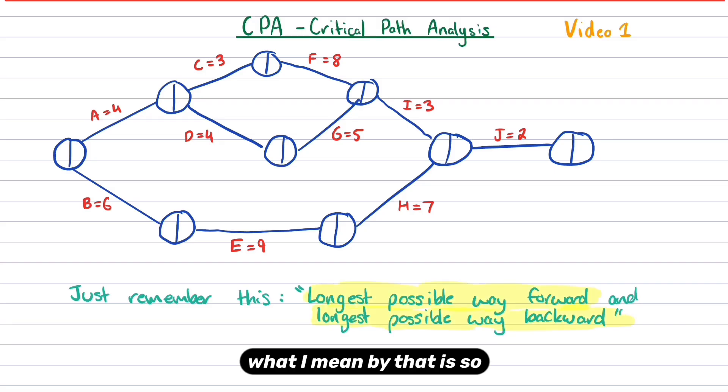What I mean by that is, so we're always going to start with zero, zero. Now, if I was to go forward towards A, it's going to be a four because there's only one possible way I can go there. So the longest possible way that I can go from my start point to the node that's next to A is four. I don't have any other option. In the same way that if I went to B, it's got to be six. There's no other option.